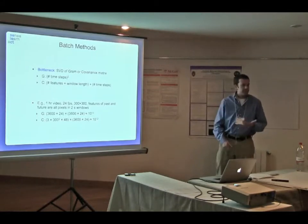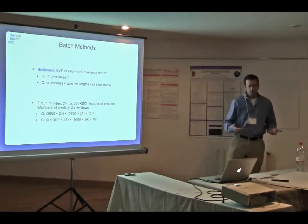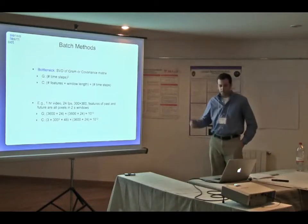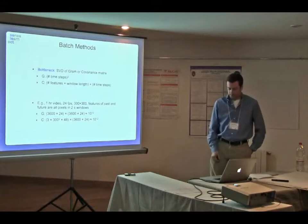The Gram matrix would have like 10 to the 10th entries, and the covariance matrix would have like 10 to the 12th entries. Trying to learn a dynamical system from either of these matrices would be impossible.